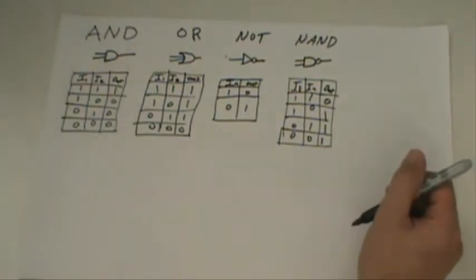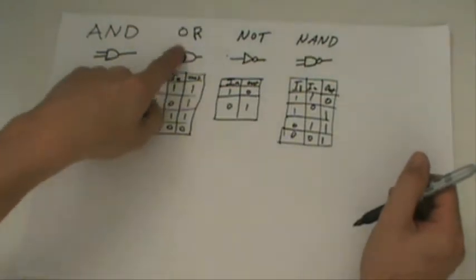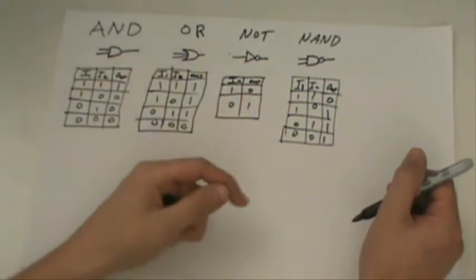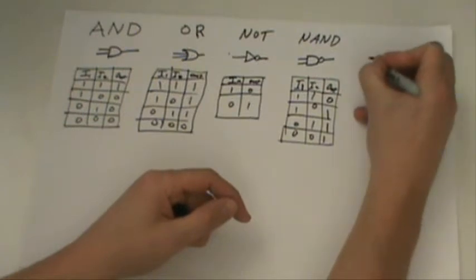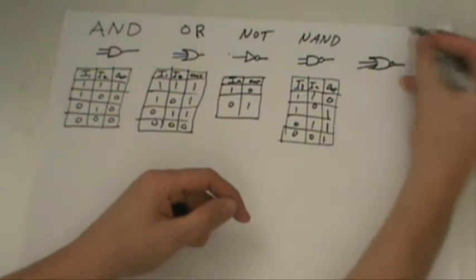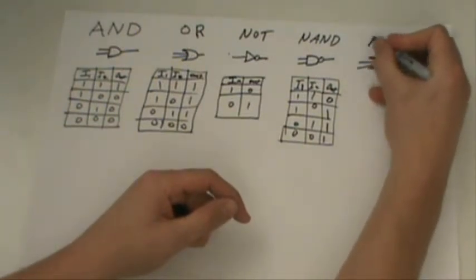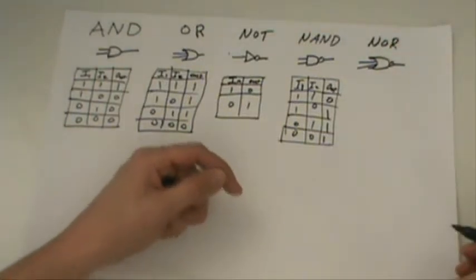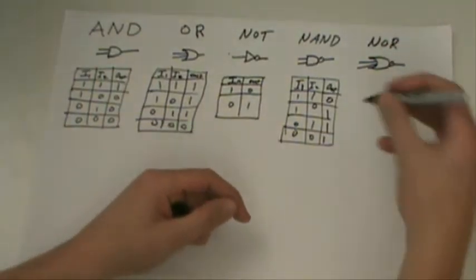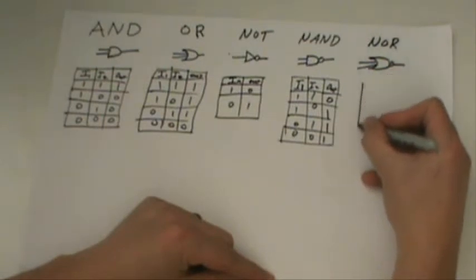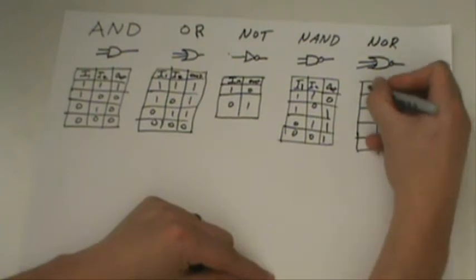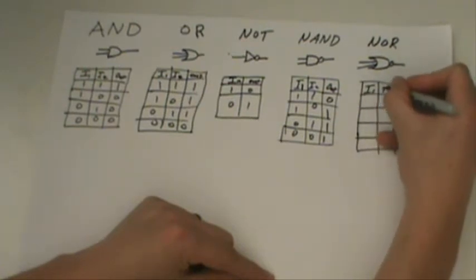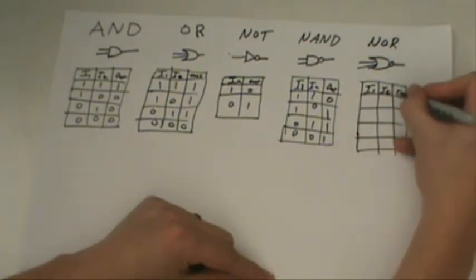The next one is, let's say we take OR and NOT and combine them together. And again, it's fairly logical. It would look kind of like that. Okay. So we have our NOR. Again, you just combine the two names and it's fairly simple. Let's create a chart for that. So we have our first input, our second input, and then our OUT.